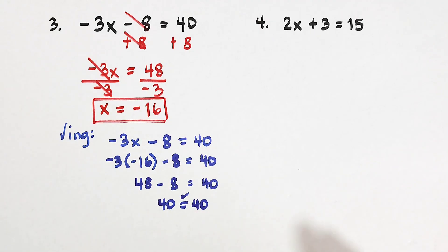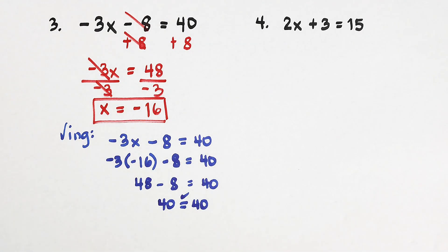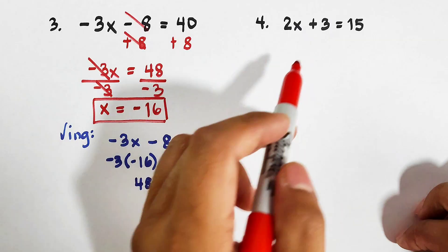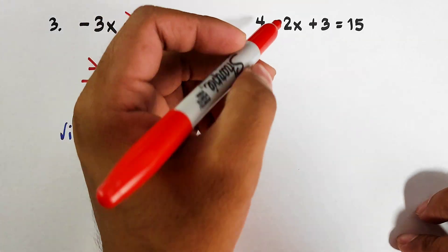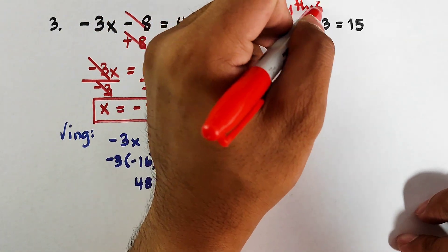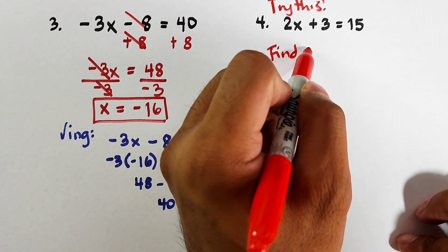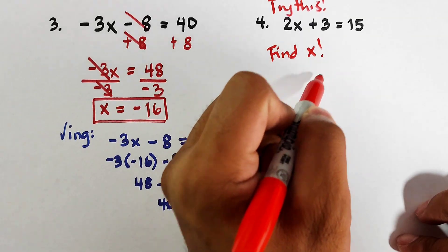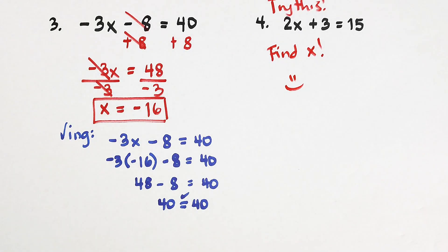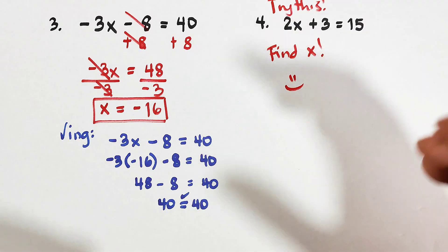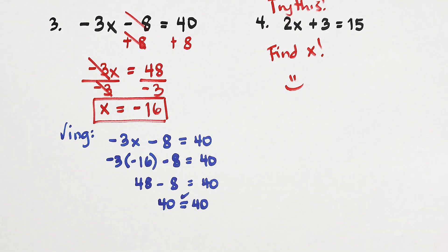I hope you learned something from this video on how to solve two-step equations. As part of our routine, here is a fourth equation for you to try: 2x plus 3 is equal to 15 — find x. If you are new to my channel, don't forget to like, subscribe, and hit the bell button to be updated on our latest uploads. It's me Teacher Gon — maraming maraming salamat, bye bye!